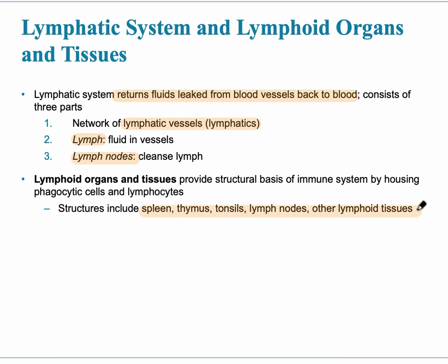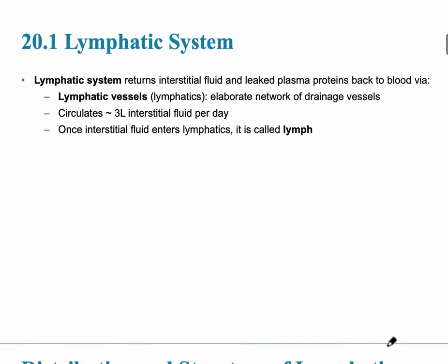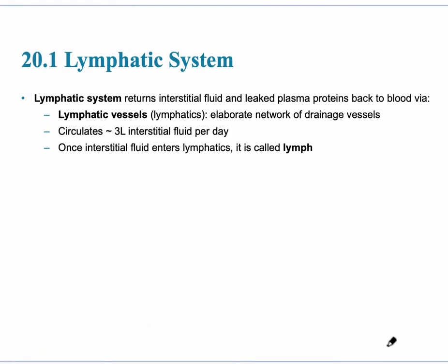Lymphoid or lymphatic tissue is found in other organs. The lymphatic system — the washing machine of our body — returns interstitial fluid and leaked plasma proteins that have leaked out of the capillaries, returning it to the blood.